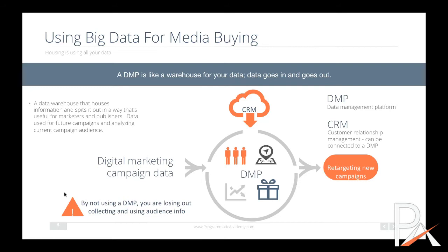A DMP can house the profiles and audiences collected when you run a campaign, and you can reuse them again. A good thing with a DMP is that you can connect your CRM — for example, Salesforce — to the data management platform, and therefore target those users online. One exception is Google, which does not allow you to directly target CRM users. However, many other DMP companies do allow this, including Media Math. Even Facebook allows you to upload a specific email database when running campaigns directly.